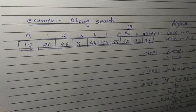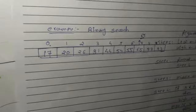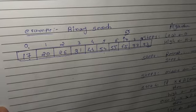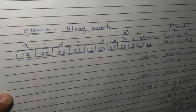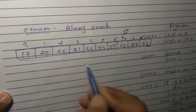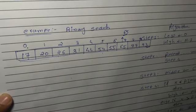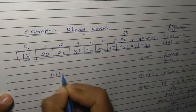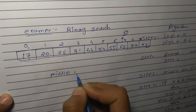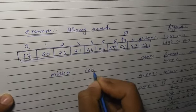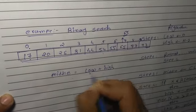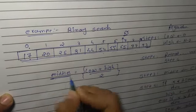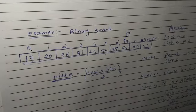Now during binary search, when we want to find the data, we apply one formula. The formula is: from the given list, find the middle portion. To find the middle portion from our data, there is a formula: middle = (low + high) / 2. If we apply this formula, we get the data at the middle portion position.